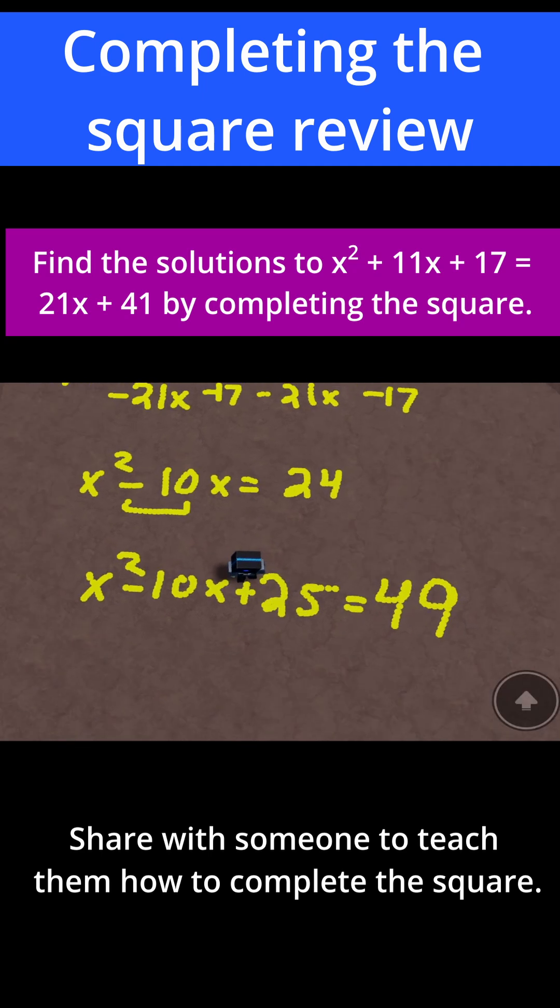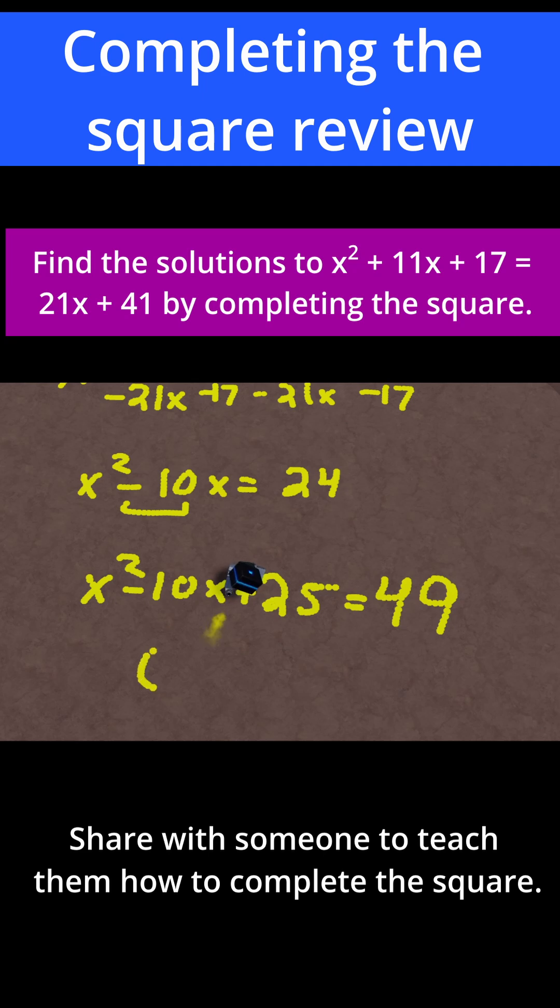And now, let's factor this. x squared minus 10x plus 25 factors as x minus 5 squared. The quick trick is you just take your middle coefficient of minus 10 and divide it by 2 to get minus 5. And this is equal to 49.